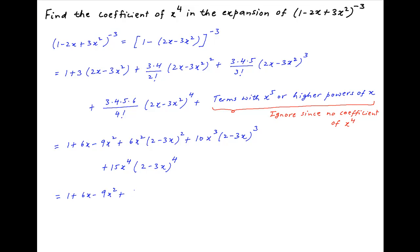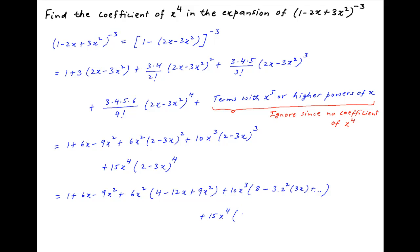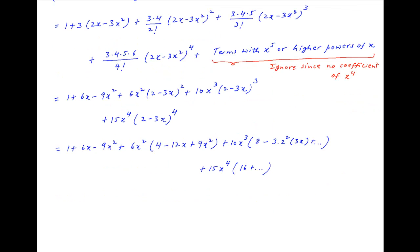The value of this expression therefore becomes 1 plus 6x minus 9x square plus 6x square multiplied by (4 minus 12x plus 9x square) plus 10x cube times (8 minus 3 times 2 square times 3x) plus terms involving x square and higher powers of x, plus 15x raised to the power 4 multiplied by (16 plus terms involving x, x square and higher powers of x).